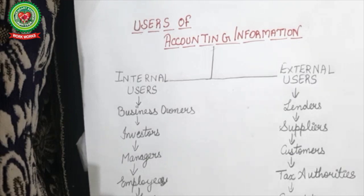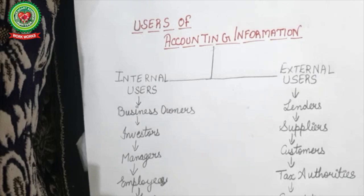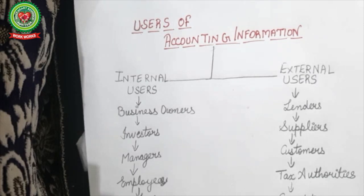Among external users, lenders are persons from whom we borrow money to raise funds and ensure availability of cash as needed. Suppliers provide raw products, finished products, or products ready for resale — they make the business happen by providing inventory and stock. Customers are the king of the society; they are the ultimate point the organization must reach, and more customers means more profits.